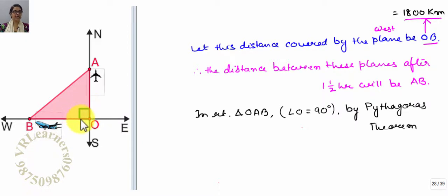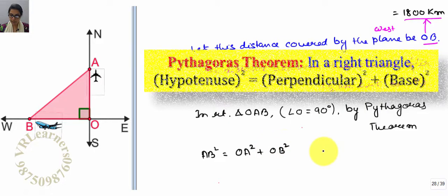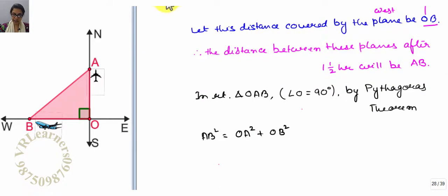So now we get to know that the angle O is 90 degrees. Hence triangle AOB, this right angle triangle, here Pythagoras theorem use. By using Pythagoras theorem we can write that hypotenuse squared is equal to OA squared plus base OB squared.